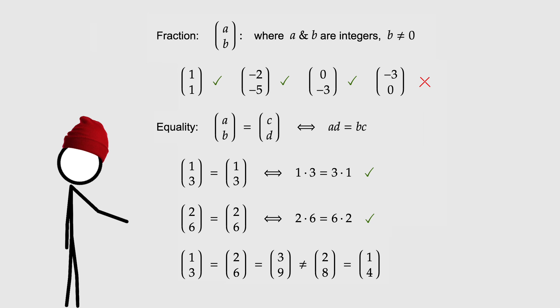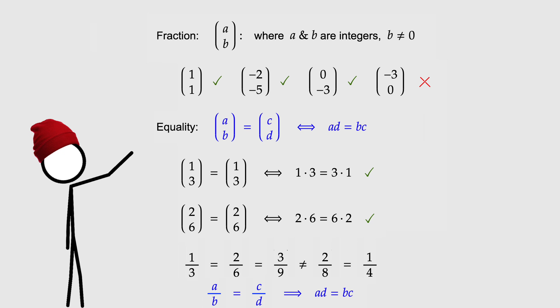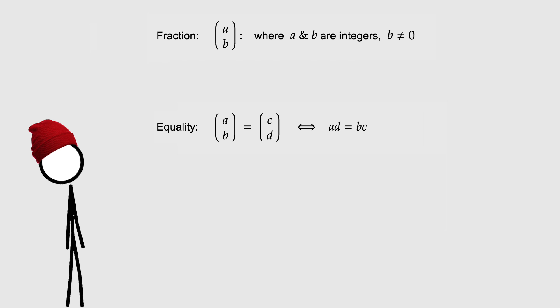Next, I will define equality between two fractions. AB equals CD, if and only if AD equals BC. For example, we can say 1, 3 is equal to itself, because 1 times 3 equals 3 times 1. And 2, 6 is also equal to itself, because 2 times 6 equals 6 times 2.